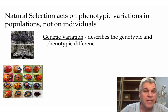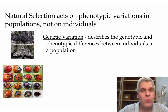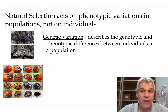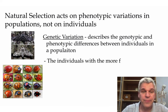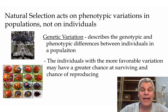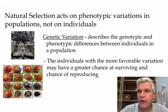So a couple of definitions. Genetic variation describes the genetic and phenotypic differences between individuals in a population. Now remember, the genotypic differences are differences in the DNA. Phenotypic differences are what we see in these pictures — how they look different from one another. Individuals with more favorable variations may have a greater chance at surviving and then reproducing, passing those same favorable traits onto their offspring.